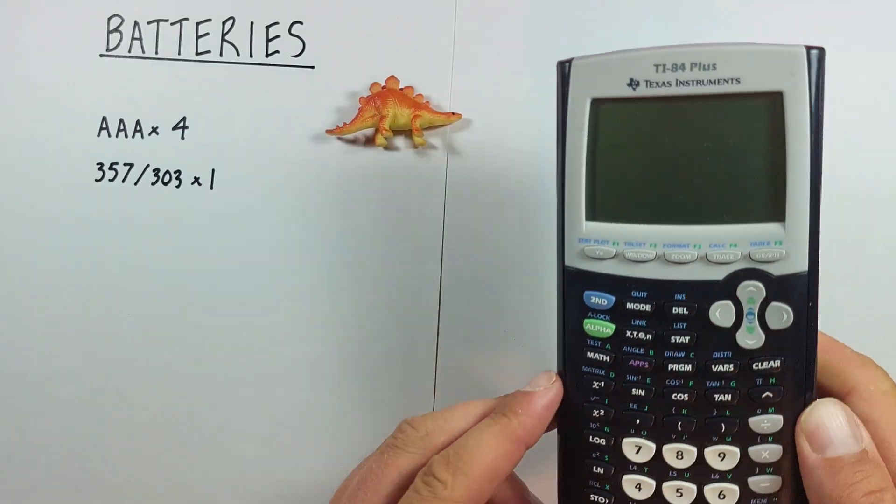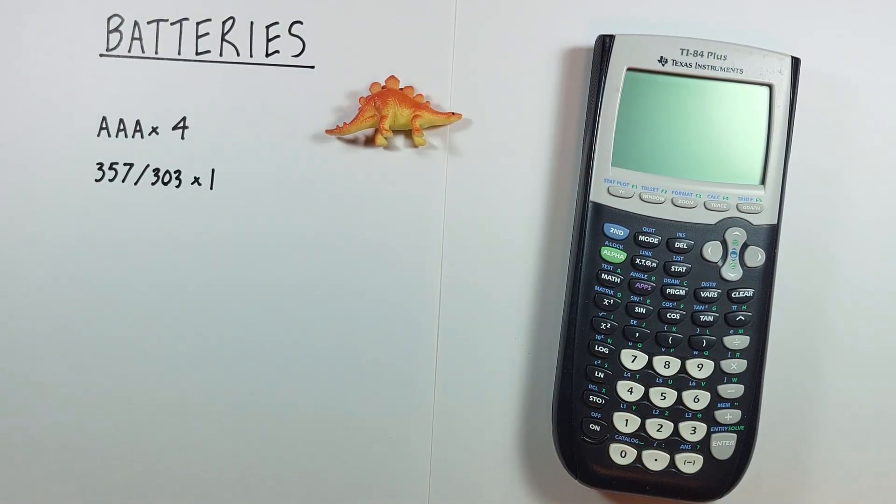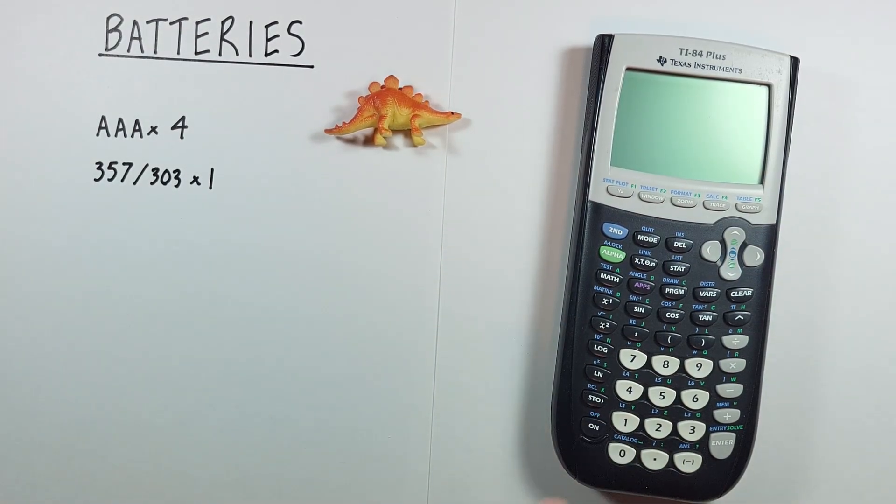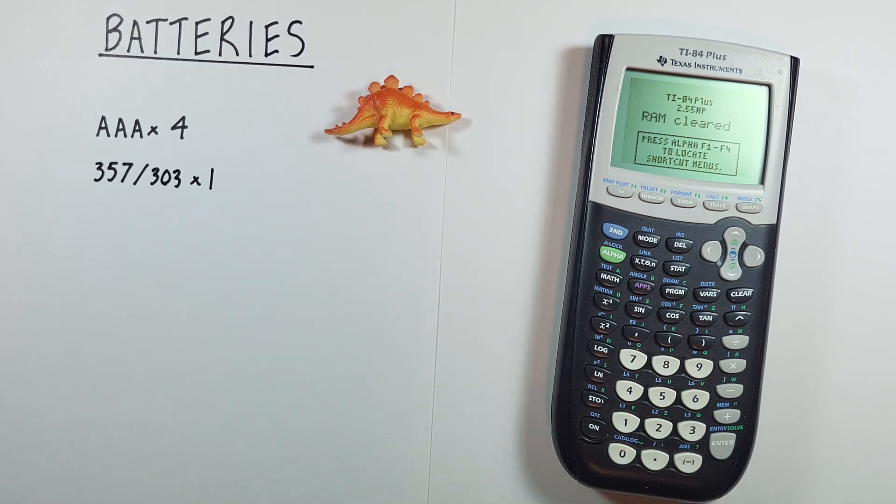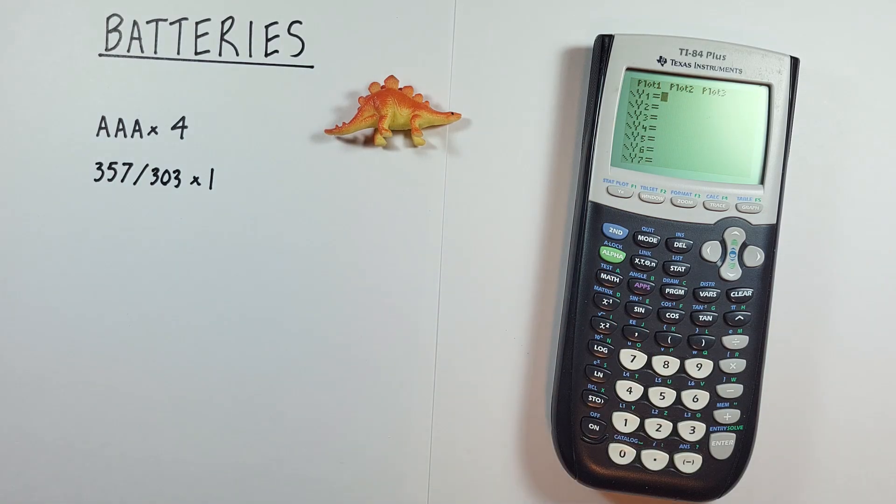Now if we turn it over and press the on button this screen will pop up. It says RAM cleared and press alpha 1 to alpha 4 to locate the shortcut menu. Well, let's just hit the F1 one.